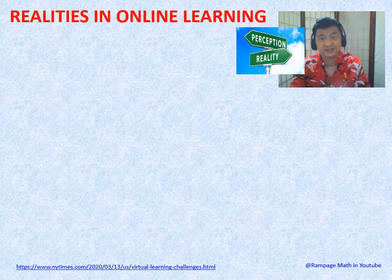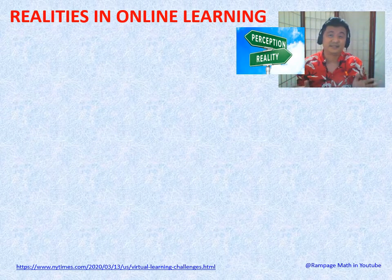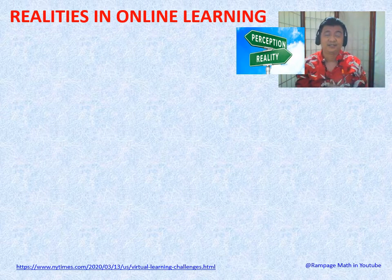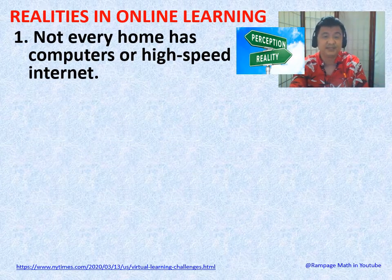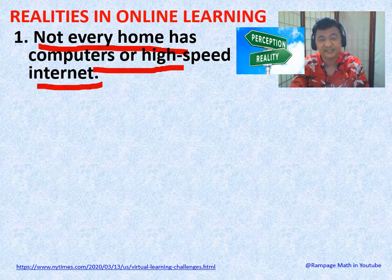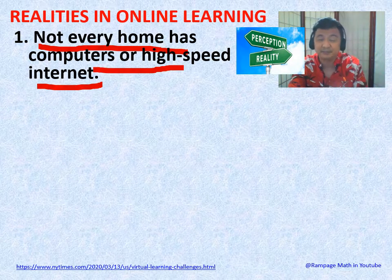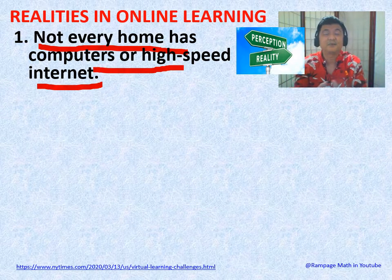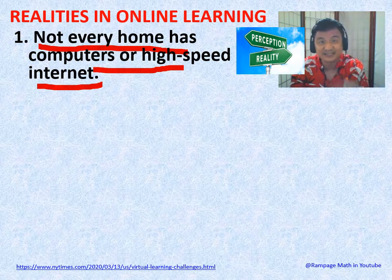Realities in online learning — this is the real thing. You hear a lot of ideal things about online learning, but in real life it's different. Number one: not every home has computers or high-speed internet. Even in America, computers are lacking, and even where computers exist, internet may not be fast enough. Even private and Catholic schools — not everyone has a device.